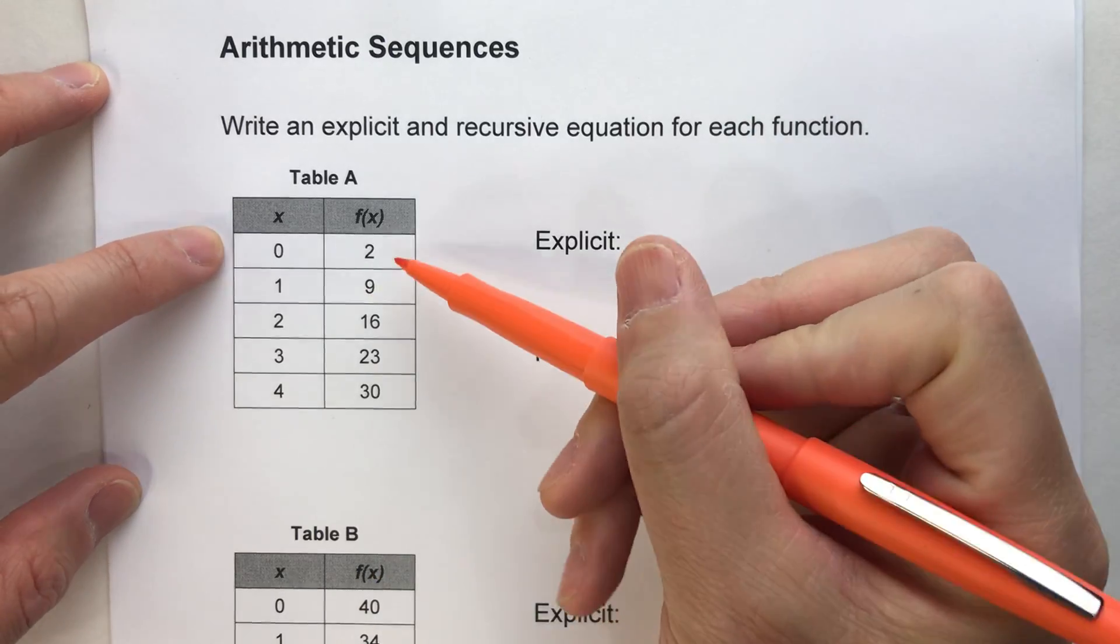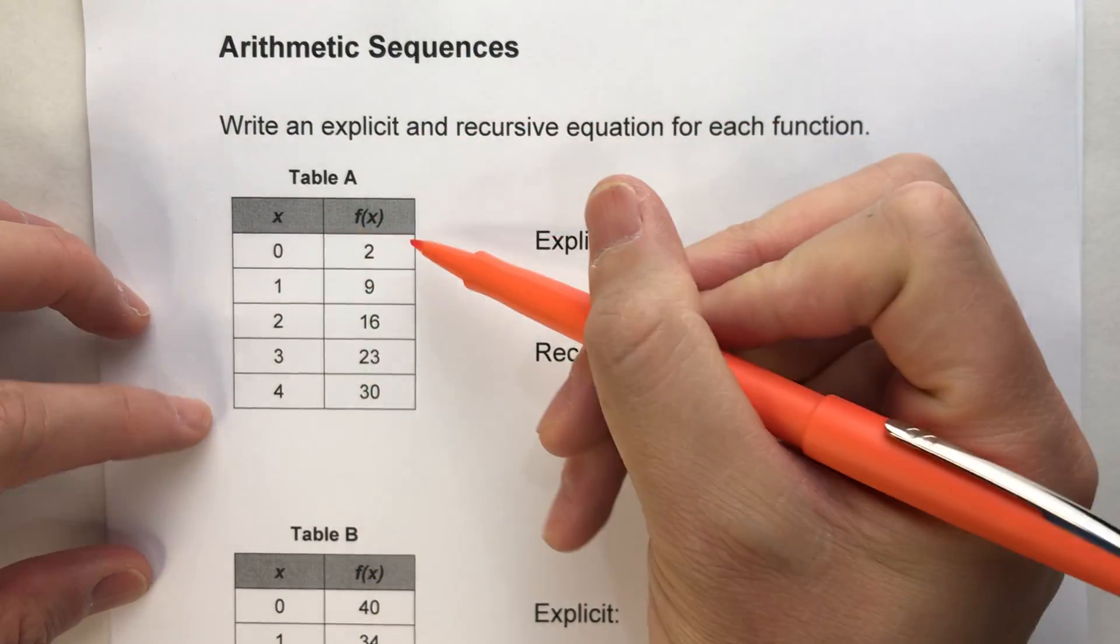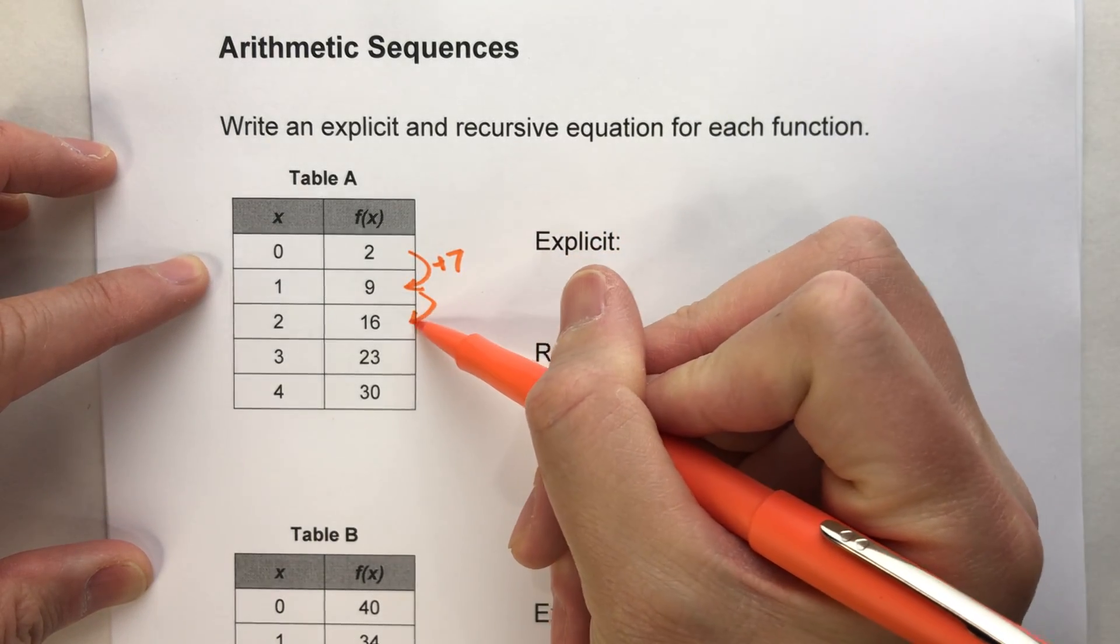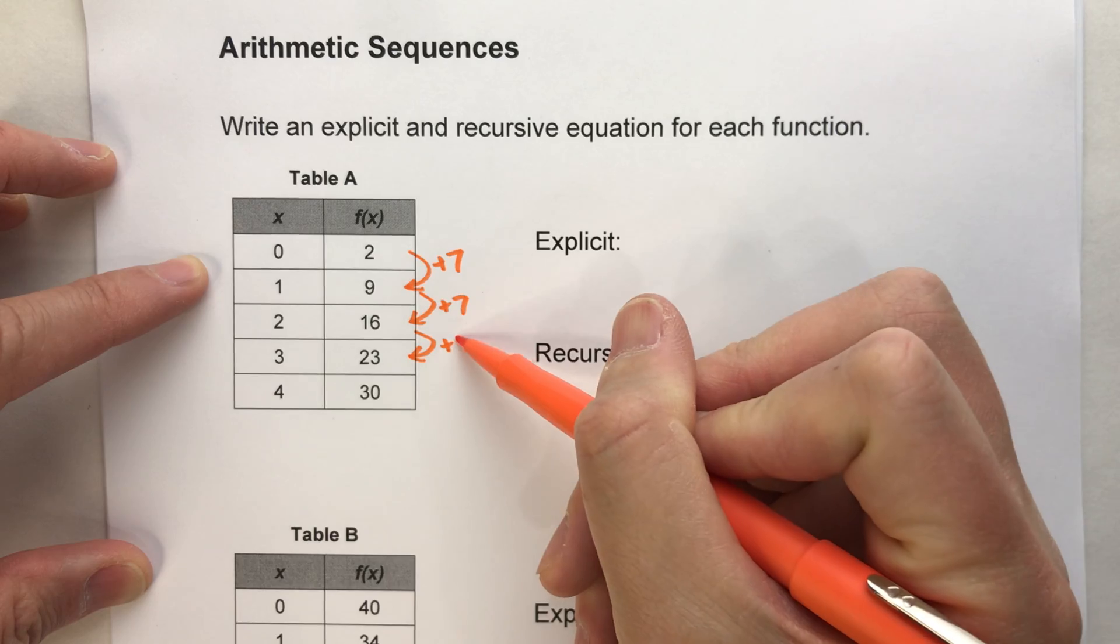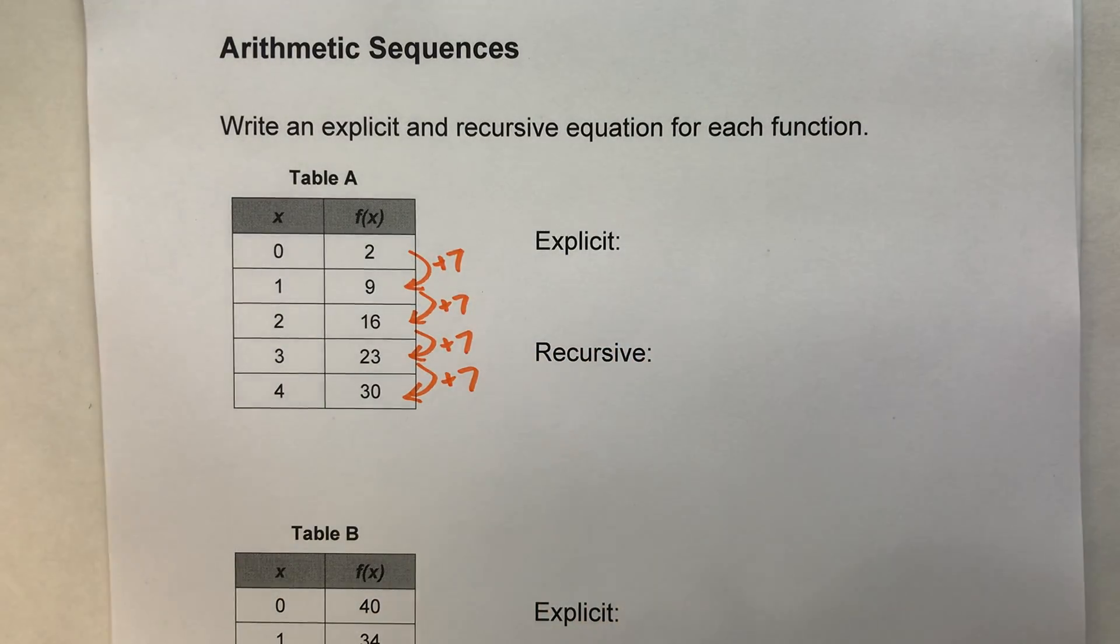For example, look at table A here. Notice as x is going up by 1, f of x is simply going up by 7. We're just adding 7 every single time to get the next number. So that's what makes it an arithmetic sequence.